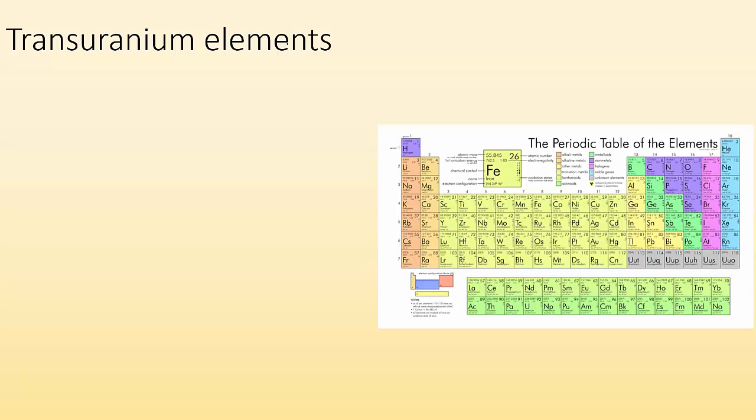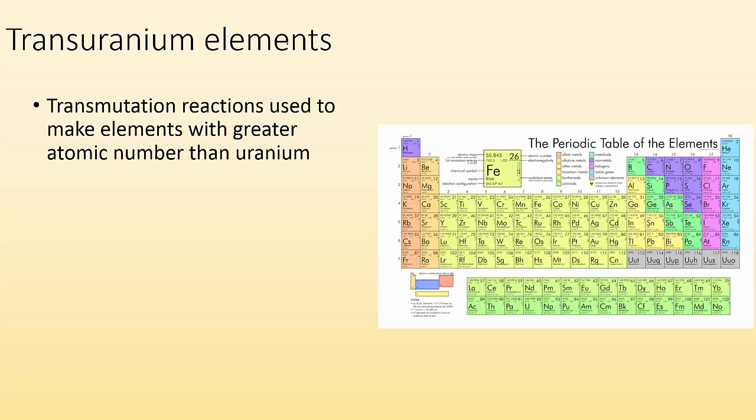All right. So we got these things called transuranium elements. Basically, we use transmutation reactions used to make elements with greater atomic number than uranium. So everything after uranium is radioactive and doesn't last that long. So how do we get all of these things? How do we get all these transuranium elements? We made them.